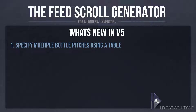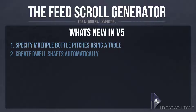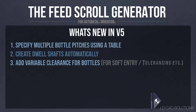Instead of just using a start and end pitch for the bottles, you can now specify as many different bottle pitches as you like using a table editor. You can now create dwell shafts automatically where the bottles stand still using the pitch table editor. You can apply variable clearance to the bottles in two different ways, very useful for soft entry of the bottles into the shaft.